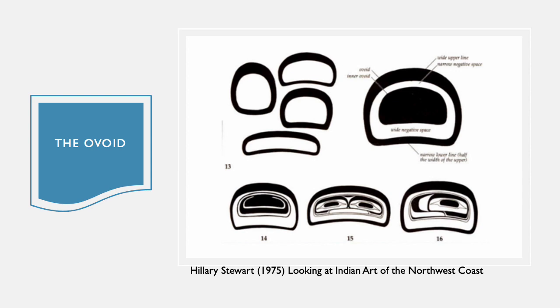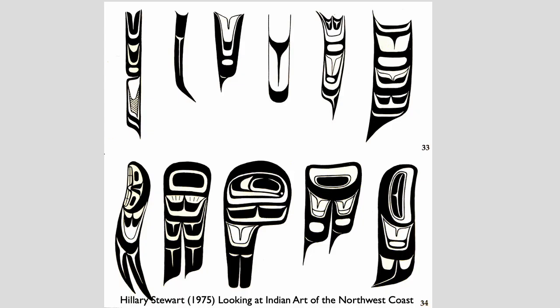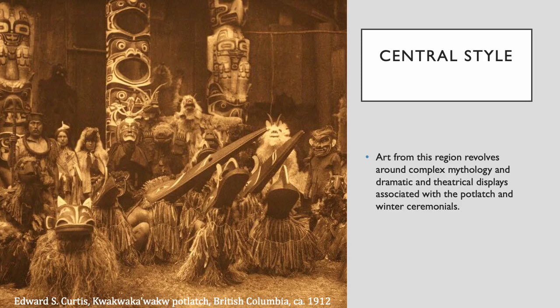Form line art also consists of a number of other style elements: the ovoid, which is a slightly squared-off oval with a concave bottom or contour; the u-form or arches; and s-forms. With the numerous variations of these elements, the possibilities for creation are almost endless. These are all feathers and wing designs created primarily from form line ovoids, u-shapes, and s-shapes.